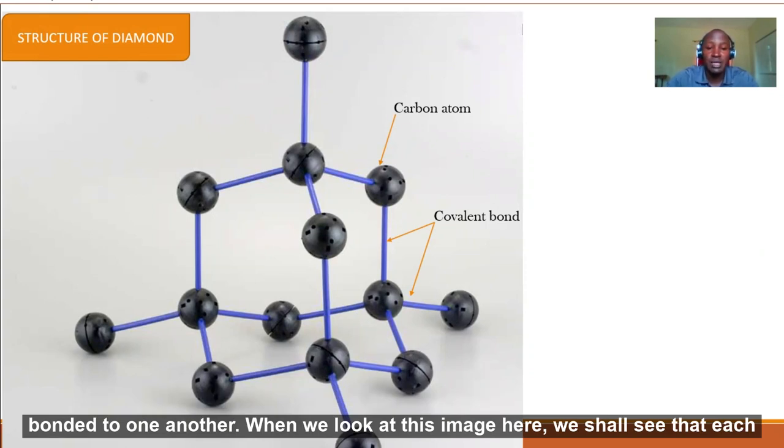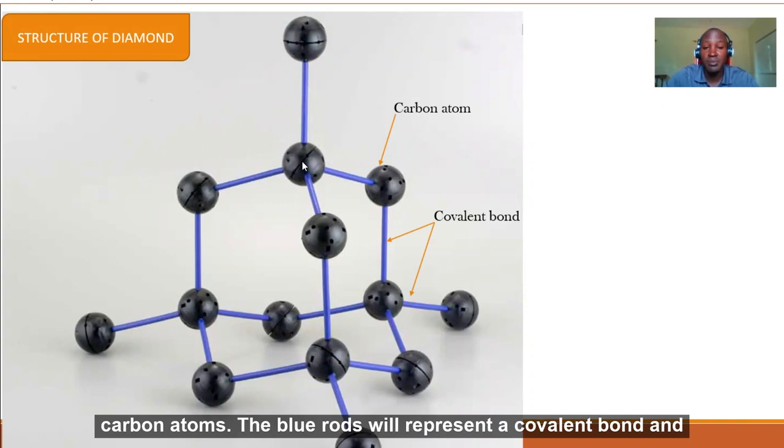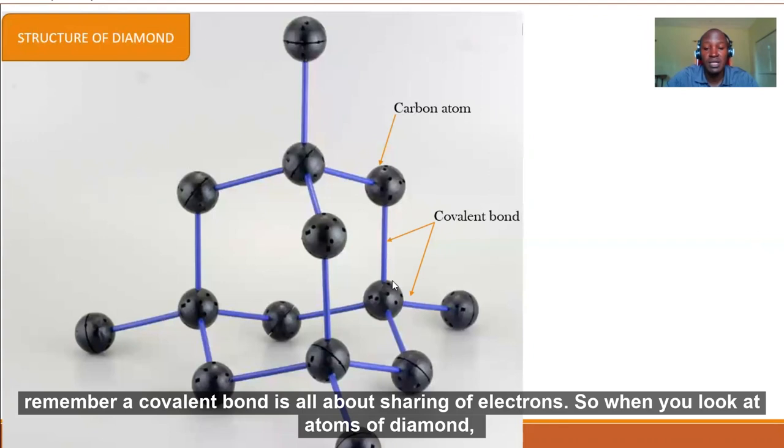When you look at this image here, we shall see that each carbon atom as a black sphere in this image is bonded to four other carbon atoms. The blue rods represent the covalent bond. And remember, covalent bond is all about sharing of electrons.